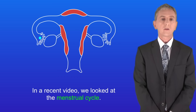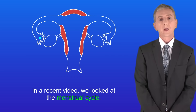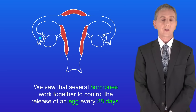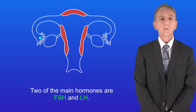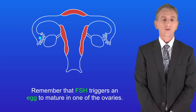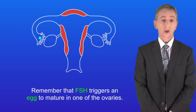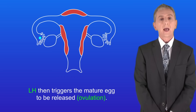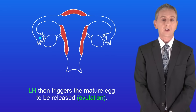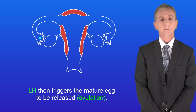In a recent video we looked at the menstrual cycle. We saw that several hormones work together to control the release of an egg every 28 days. Two of the main hormones are FSH and LH. Remember that FSH triggers an egg to mature in one of the ovaries, and LH then triggers the mature egg to be released — in other words, ovulation.